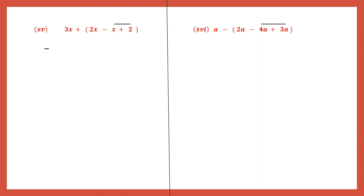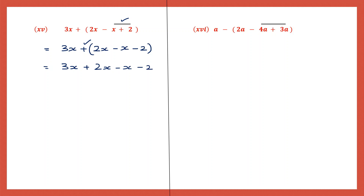Question 15: 3x. We can't open this bracket because we have a bar bracket first. So that is 2x - now we have minus before the bar bracket, so the sign of all the terms inside will change: this will be minus x minus 2. Now let's work it out. 3x - we can open the common brackets now. The sign before that is plus, so no change. The signs remain the same: plus 2x, minus x, minus 2. Now grouping all the x: 3x plus 2x minus x. 3 plus 2 is 5, 5 minus 1 is 4. So here we have 4x minus 2.